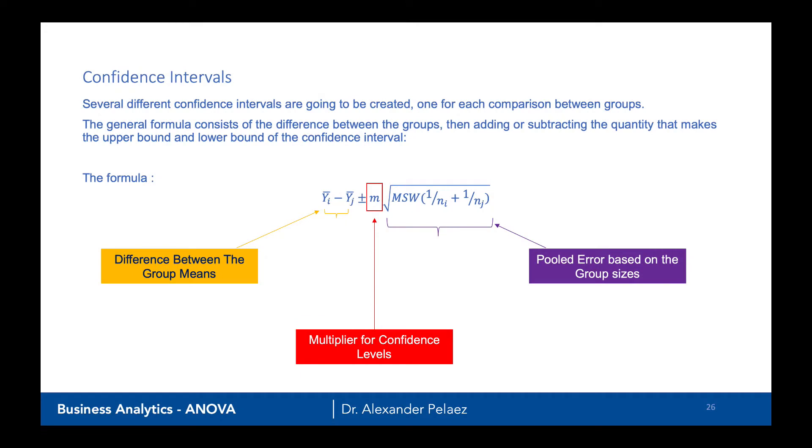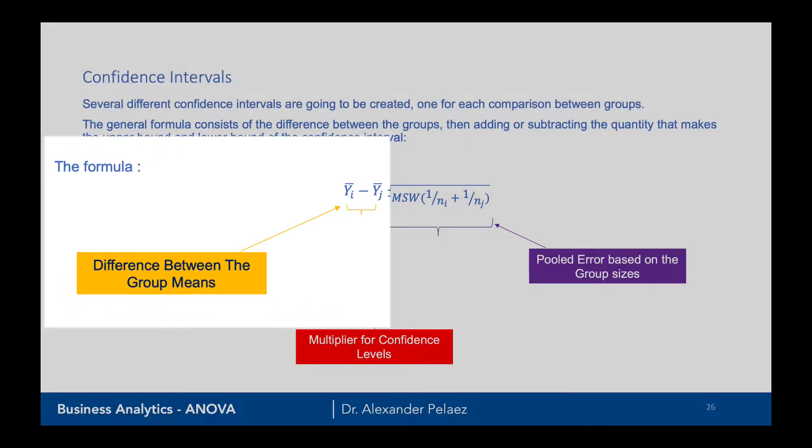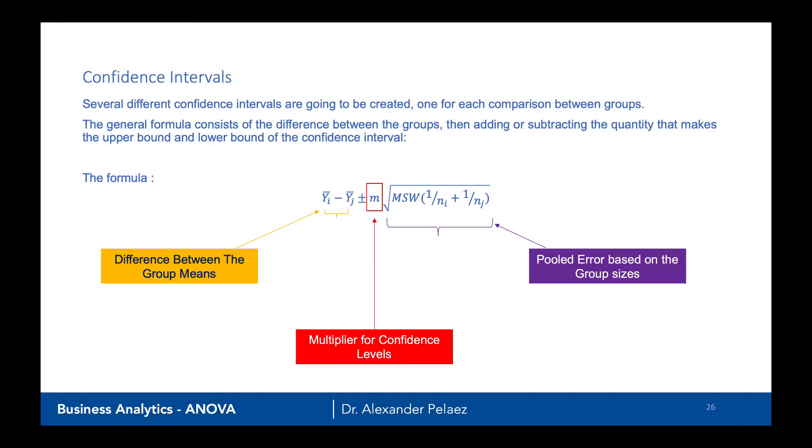The confidence interval is basically a formula, and we break it here into three parts. The first leftmost part is simply the difference between the groups. YI bar is basically the first group mean. YJ bar is basically the second group mean. We just subtract the two and say, this is the difference.